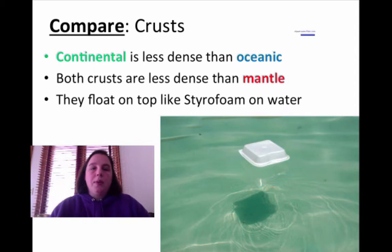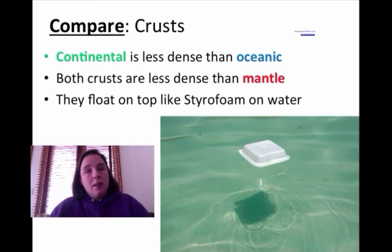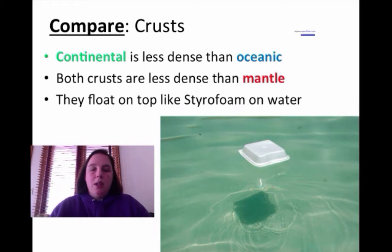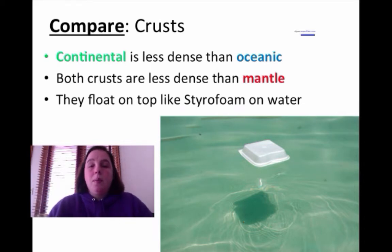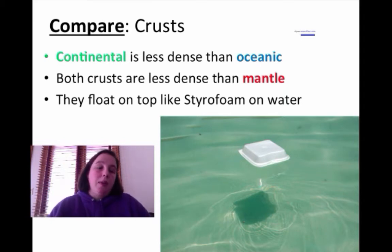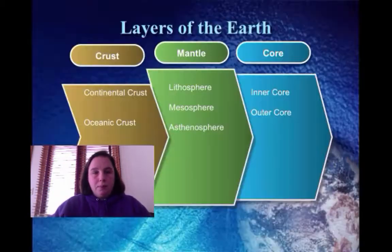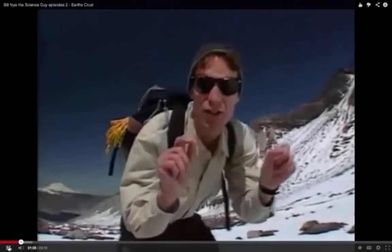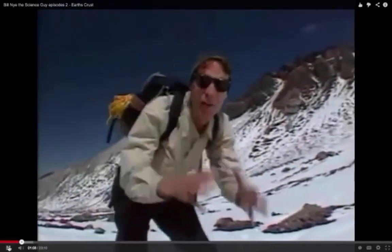Let's compare the two crusts. Continental is less dense than oceanic, and both are less dense than the mantle, which is the next big layer we're talking about. Here's a good analogy: it's like styrofoam on water. You and I live on the earth's crust — a thin layer of solid rock all around the earth.